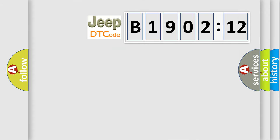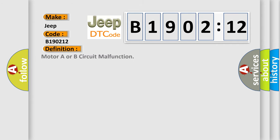So, what does the diagnostic trouble code B190212 interpret specifically? The basic definition is motor A or B circuit malfunction. And now this is a short description of this DTC code. Ignition on system voltage 9 to 18 volts.